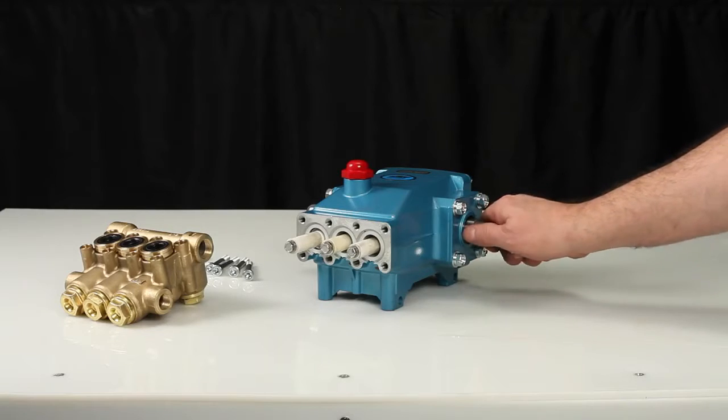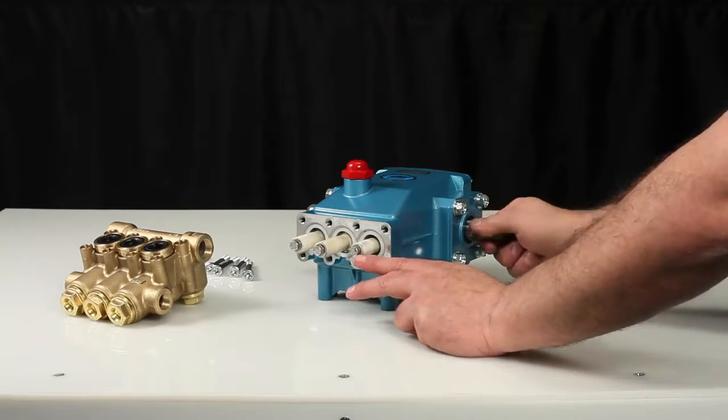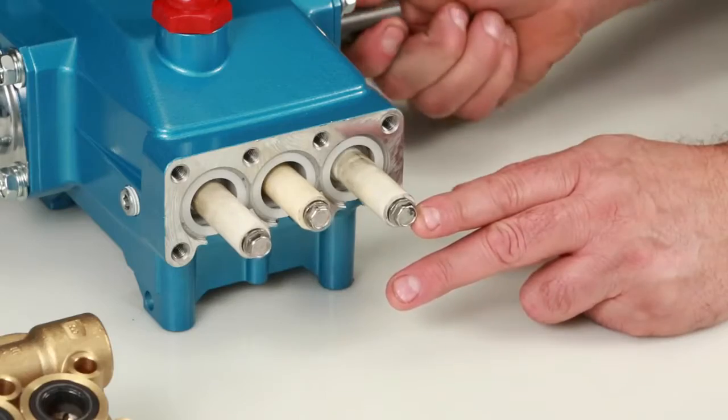Before reinstalling the manifold, rotate the crankshaft so the outside two plungers are even at the furthest distance from the crankcase.